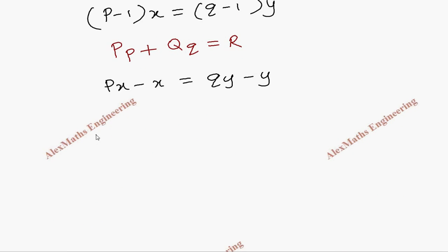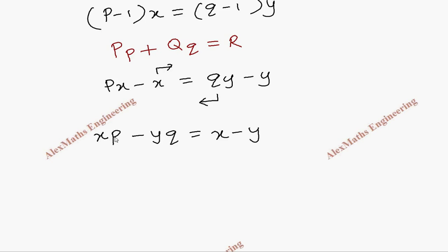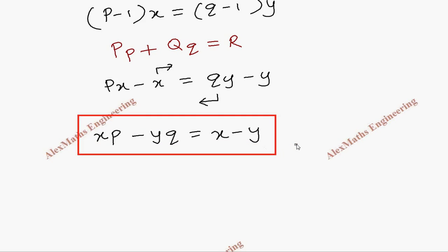We need to rearrange this in the form of capital P, small p, plus capital Q, small q, equals R. Writing the p term: x times p, then bringing the Q term to the other side gives minus y times q, and taking x to the other side gives the constant. So the required partial differential equation after eliminating the arbitrary function is: x·p minus y·q equals x minus y.